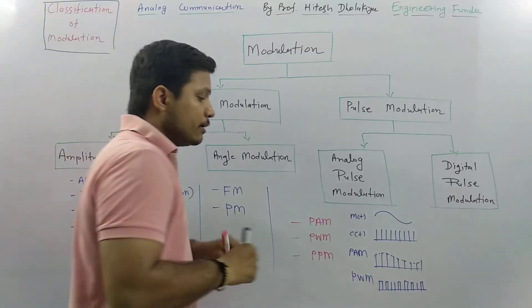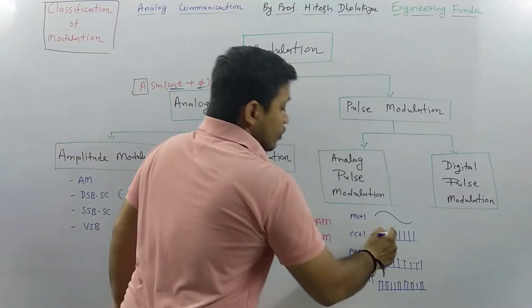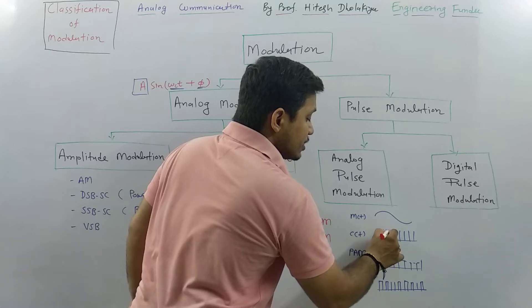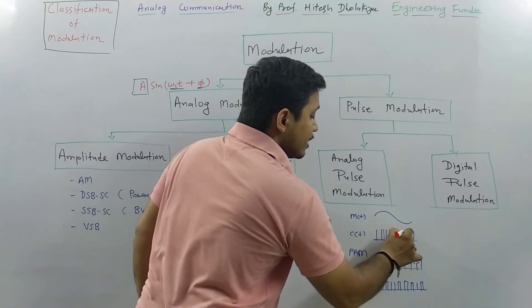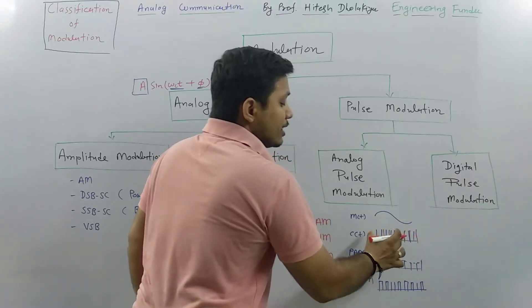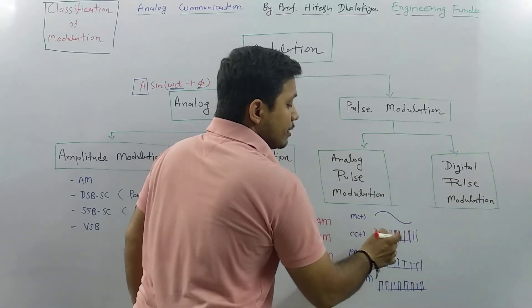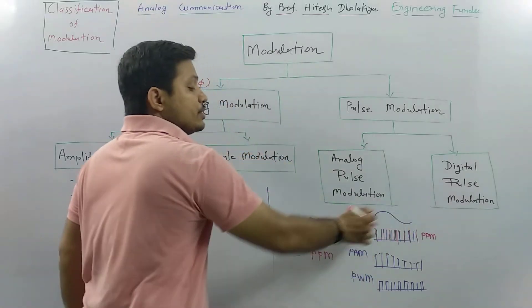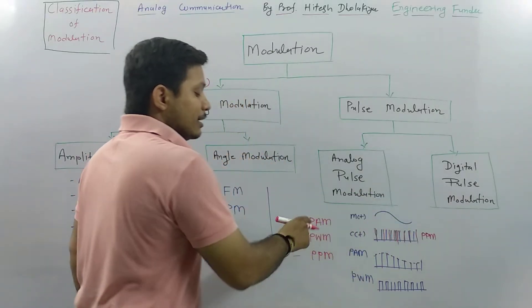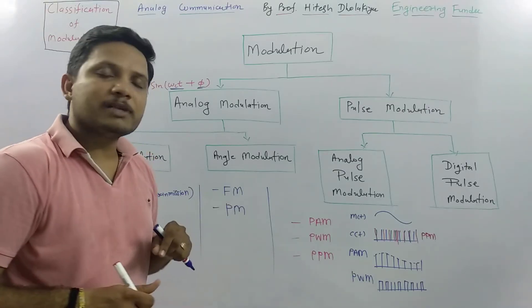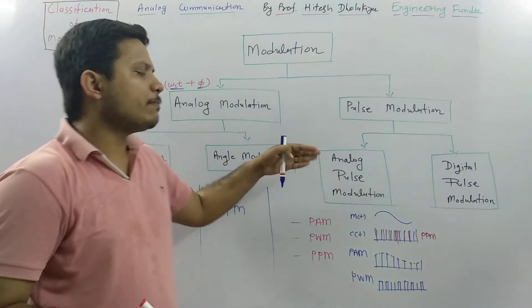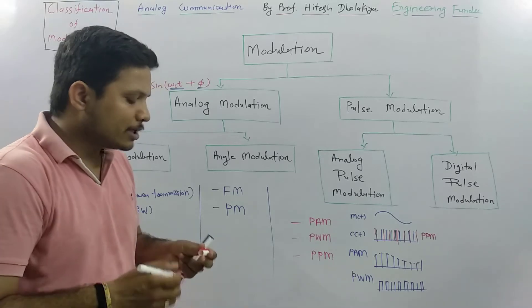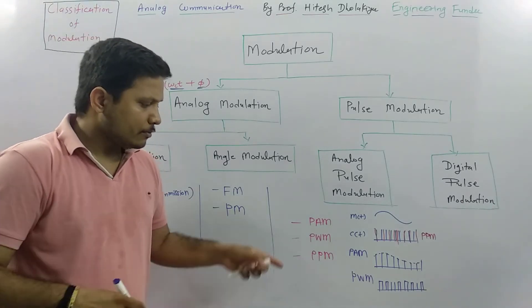The next technique is pulse position modulation, PPM. In pulse position modulation, we change the position of the pulse. In PPM, pulses can appear at different positions — there may be more density at some points — so the position of the pulse changes with respect to the modulating signal. In analog pulse modulation we study three techniques: pulse amplitude modulation, pulse width modulation, and pulse position modulation.